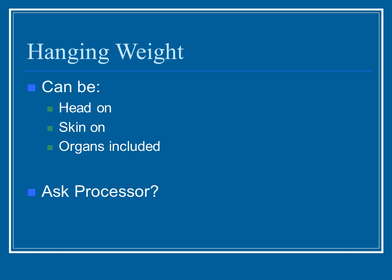Hanging weight is the weight of the animal after it has been killed. Most of the time it's with the head off, no skin, and the organs are not included, as the picture to the right shows. However, different processors will have different ways of doing it, so you really do need to have some clarity with your processor so you can determine what exactly that hanging weight means.